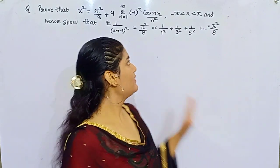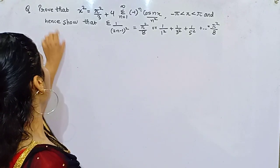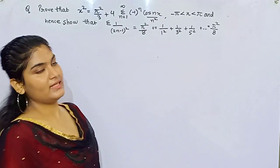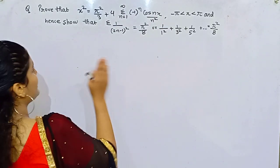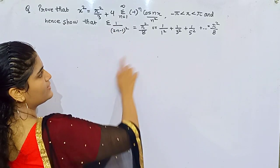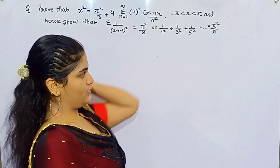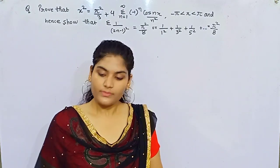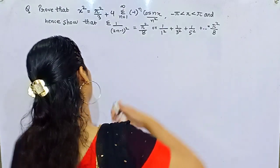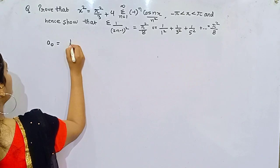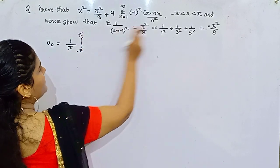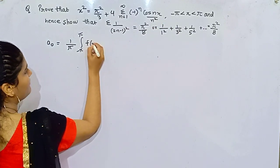First of all let's have a look at the question. You need to prove this function should be equal to this when your interval is from minus pi to pi, and then you have to show that the sum of 1 upon odd number squared is equal to pi squared by 8. So how can we do so? The formula for A0 is 1 by pi, integration over your interval which is minus pi to pi, of f(x) dx.